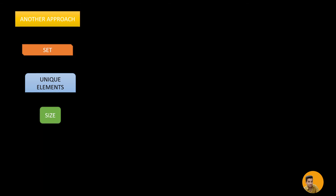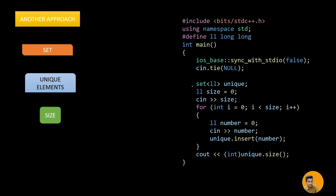There is another approach using a set. We know a set is a container that stores only unique values with no duplicates. If we store the list of values in a set and display the size of the set, that gives us the number of distinct values. The logic is similar to using a vector — just replace vector with set and specify the data type, here long long.